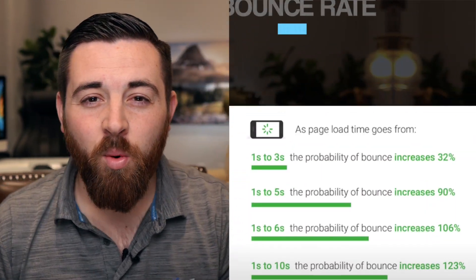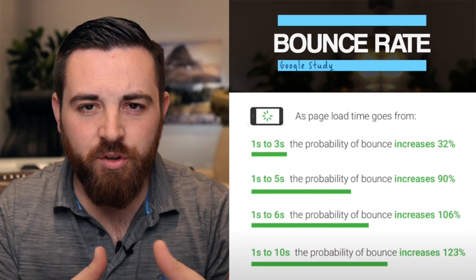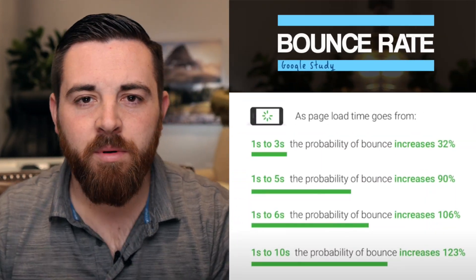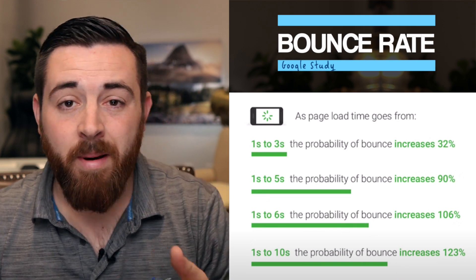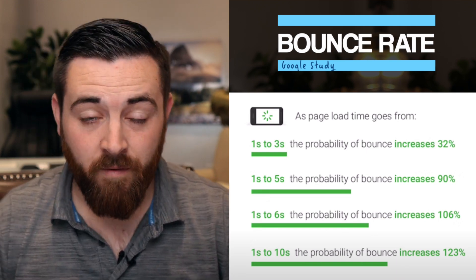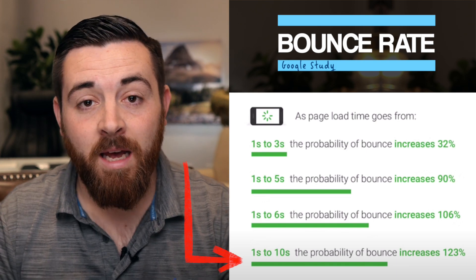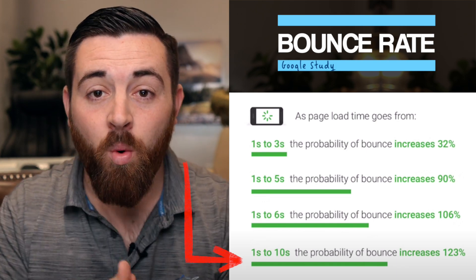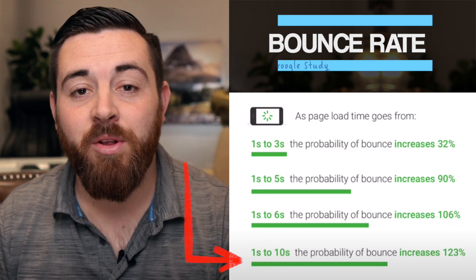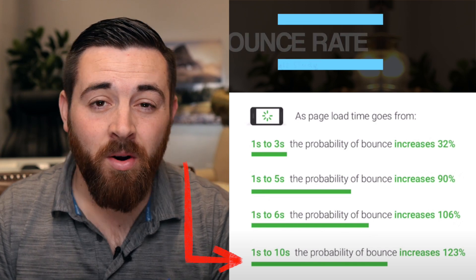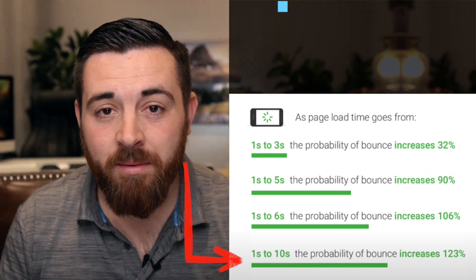The speed of your website has a severe impact on how willing people are to interact with your content. Google shared this really cool table showing the correlation between the speed of your website and the bounce rate of your visitors. The slower your website is, the higher the bounce rate is — those are people who wanted to interact with your content, who just decided it wasn't worth it because your website was too slow.